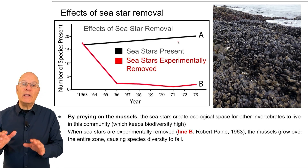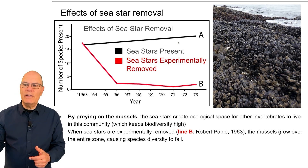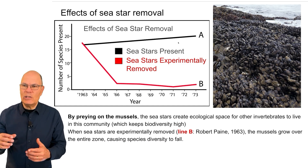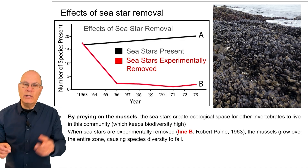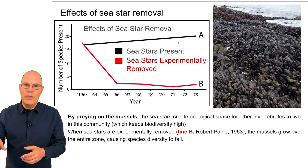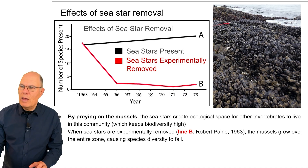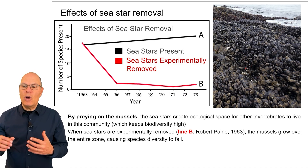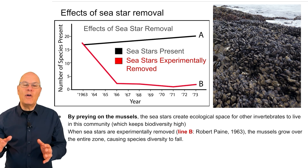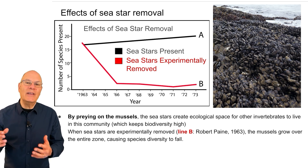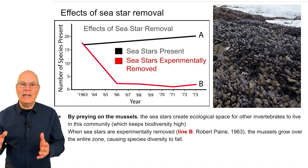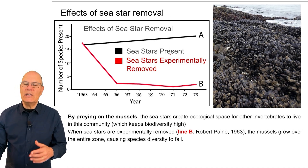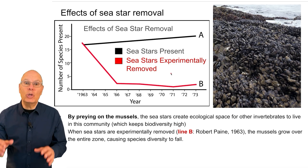When sea stars are experimentally removed — which happened in a famous experiment by Robert Payne in the 1960s, where he took sea stars and threw them into the ocean away from the intertidal zone where they were preying on mussels — the mussels overgrew the entire intertidal zone, and that caused species diversity to fall. All the other species that were previously living in that zone couldn't live there anymore. That's the effect of the removal of a keystone species upon the diversity of a biological community.